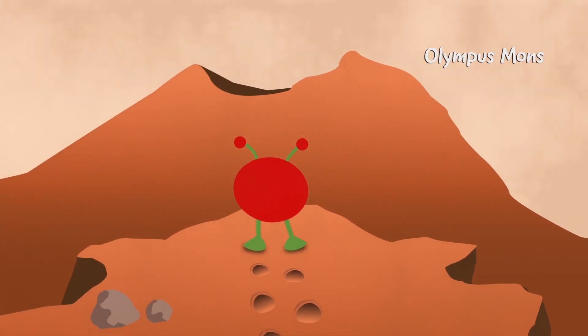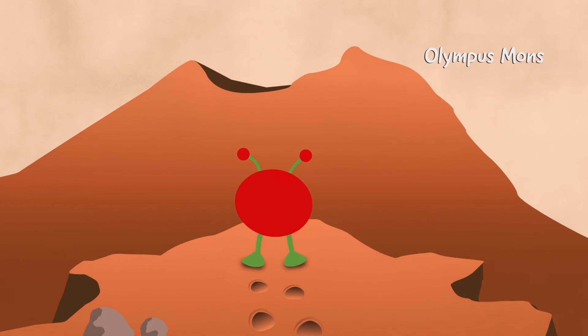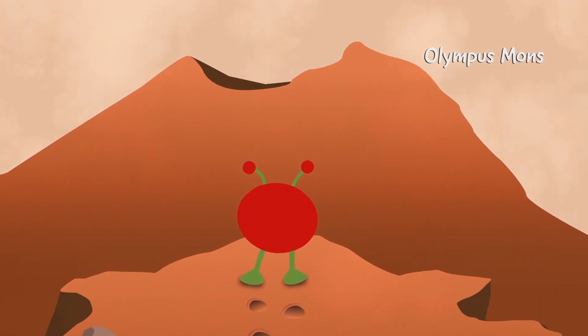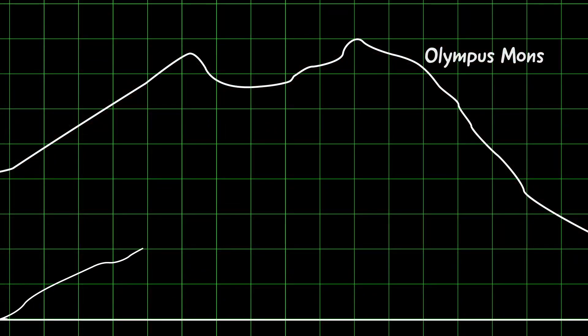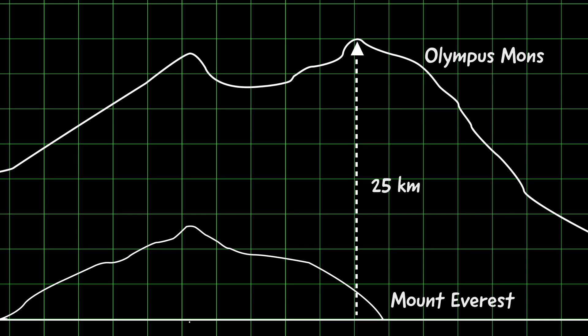If you ever visit, you simply must go to Olympus Mons. It's the tallest volcano in the solar system. It's nearly three times higher than Earth's Mount Everest.